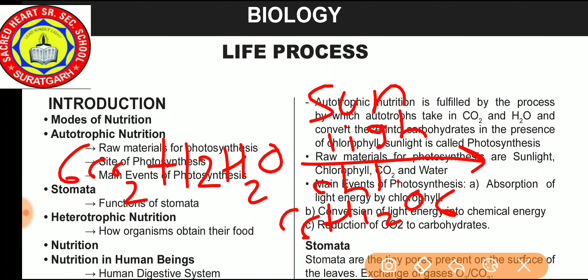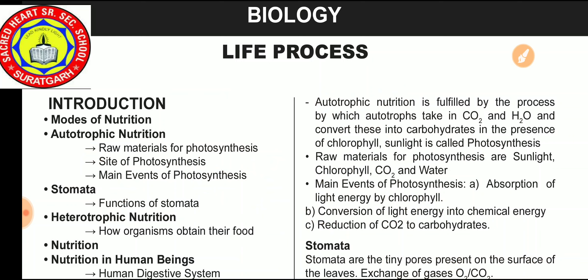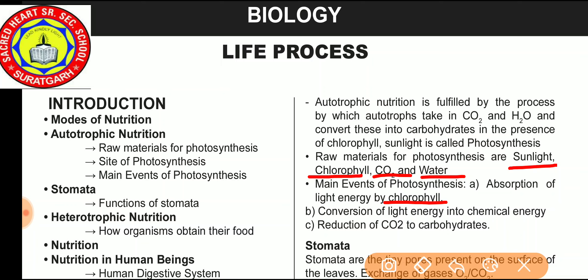By photosynthesis, the plants make their own food. The raw materials for photosynthesis are sunlight, chlorophyll, carbon dioxide and water. The main events of photosynthesis are: first, absorption of light energy by chlorophyll; second, light energy is converted into chemical energy; and third, reduction of carbon dioxide to carbohydrate.